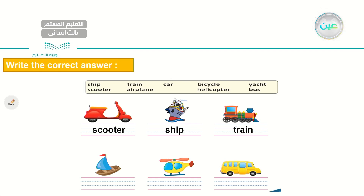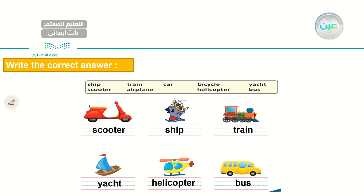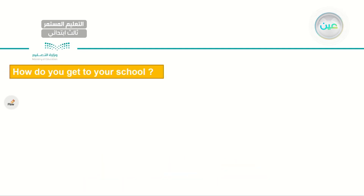Now let's go below. I have a yacht. Right next to it, I have a helicopter. And for the last one, I have a bus. Let's read our answers one last time: scooter, ship, train, yacht, helicopter, and bus.